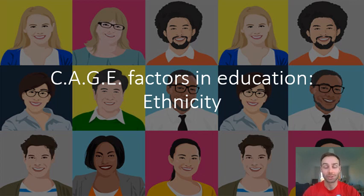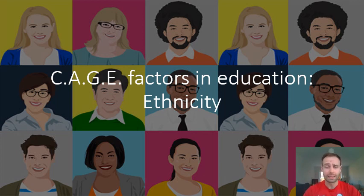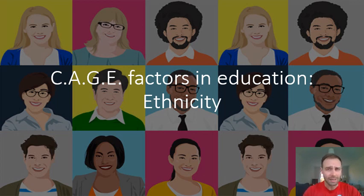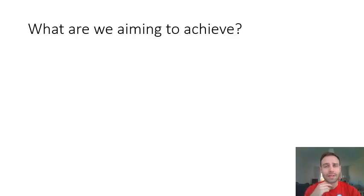Welcome to your online sociology lesson. We are going to continue looking at our CAGE factors in education — that's class, age, gender, and ethnicity — and today we are going to look at ethnicity as a factor in educational achievement. Basically, what are the differences in students from different ethnic backgrounds? Do some ethnic backgrounds perform better in schools, do some perform worse, and that key question in sociology: why?